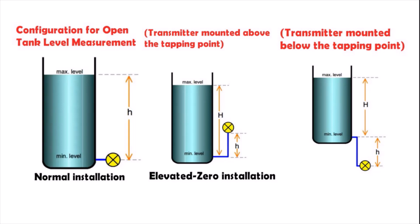The third one is transmitter mounted below the tapping points, and it's called suppressed zero installation. Thanks for watching.